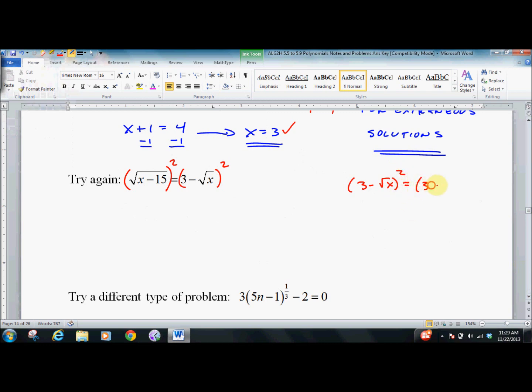This is equivalent to saying 3 minus root x times 3 minus root x. And we have to foil it out. 9 minus 3 root x minus 3 root x plus x.